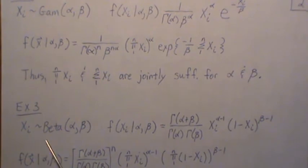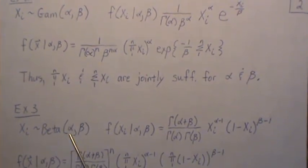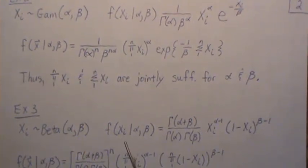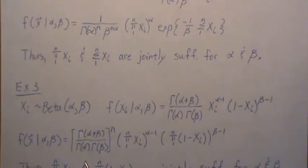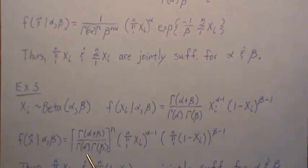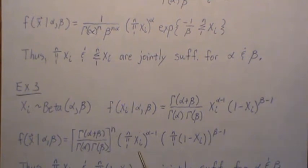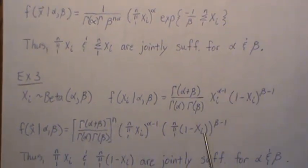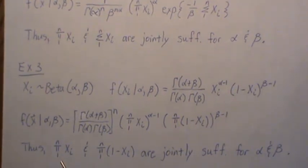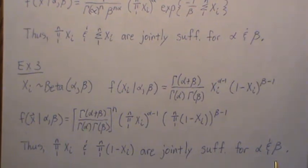Example three: let Xi be beta with parameters alpha and beta. The density is given for x between 0 and 1. The joint density is the product of all the individual densities, and this is a function of alpha and beta and the data only through two statistics. So the product of the Xi's and the product of the (1 minus Xi)'s are jointly sufficient for alpha and beta.